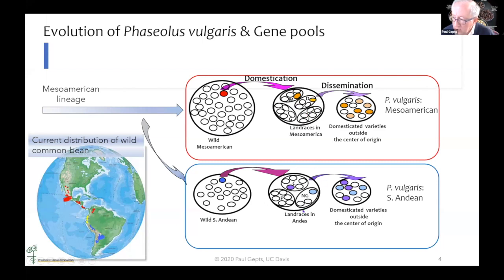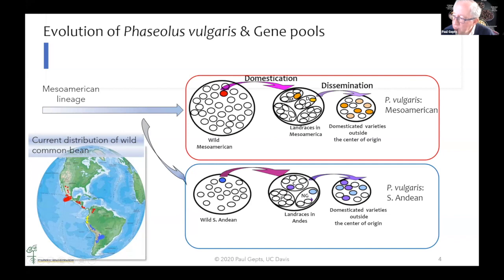In the Andean gene pool, among landraces you see three races: Nueva Granada, which is the most common and includes many bush determinate beans; race Chile, which is not well known; and race Peru from the central Andes. Some of these races have been dispersed outside their centers of domestication — especially race Mesoamerica and race Durango — while race Jalisco, Guatemala, and Peru have been left behind due to their photoperiod sensitivity and interactions with temperature.